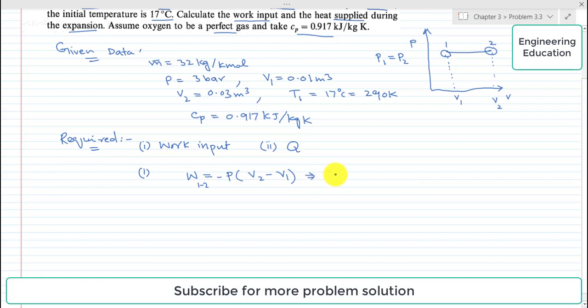Putting the values, work from 1 to 2 is equal to P is 3 bar, converting it to Pascal, we will multiply 10 to the power 5 into V2 is 0.03 cubic meter while V1 is 0.01. Simplifying this, the work done during expansion process comes out minus 6 kJ. This is the work done during this isobaric process from 1 to 2.